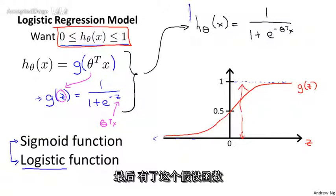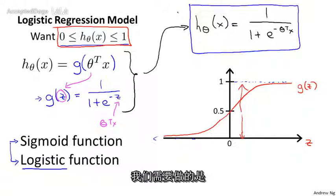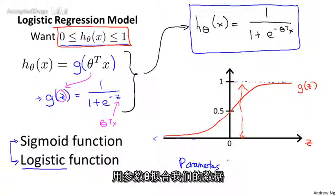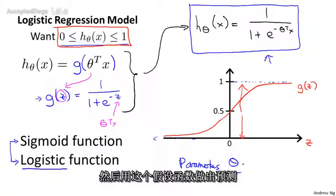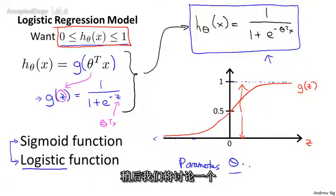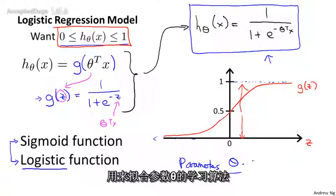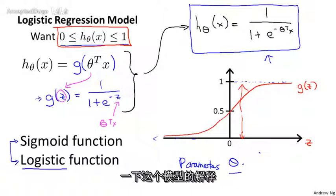Finally, given this hypothesis representation, what we need to do, as before, is fit the parameters theta to our data. So given a training set, we need to pick a value for the parameters theta. And this hypothesis will then let us make predictions. We'll talk about a learning algorithm later for fitting the parameters theta. But first, let's talk a bit about the interpretation of this model.